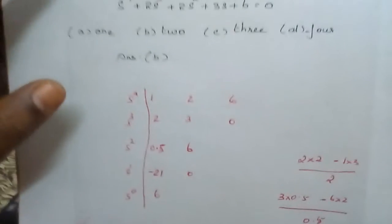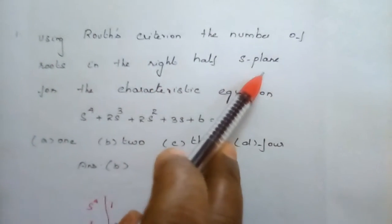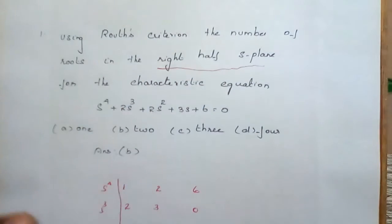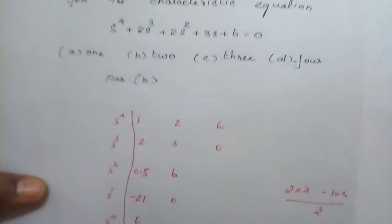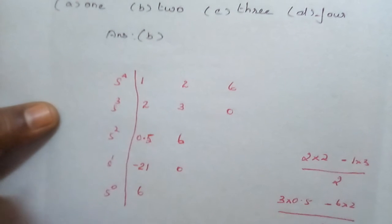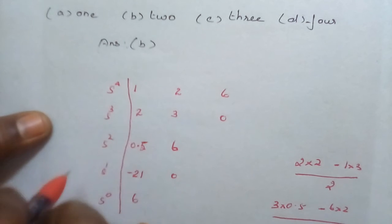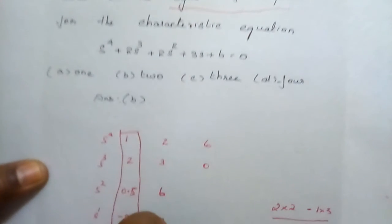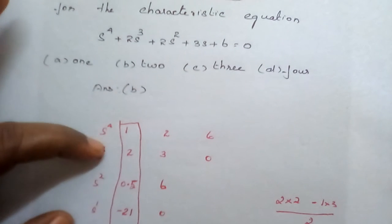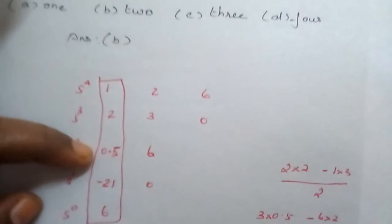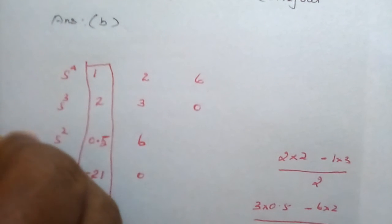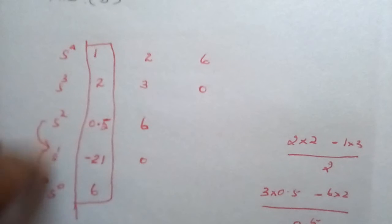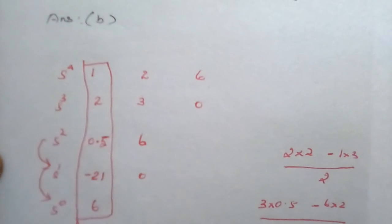Our question asks for roots in the right half of the S-plane. First, we check the number of roots in the left half via the stability check — looking at the first column for sign changes. From 1 to 2: no sign change. From 2 to 0.5: no sign change. From 0.5 to −21: no sign change. From −21 to 6: no sign change. The number of sign changes gives the roots in the right half of the S-plane.